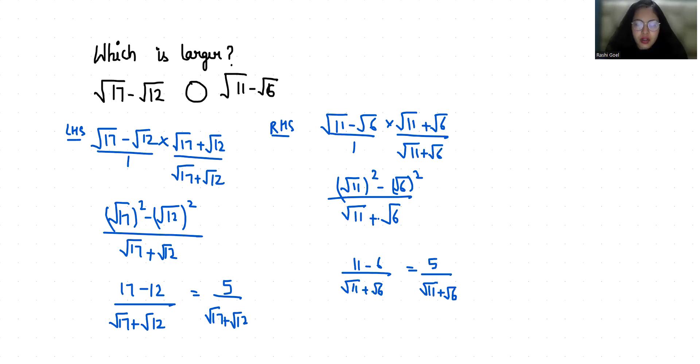Now we can see that our numerators are equal and we have to compare on the basis of our denominator. The first coefficient is root 17 here and root 11 here, so we can directly say that root 17 is greater. Second coefficient is square root 12 and here is square root 6, it is also greater. And there is an addition sign, so when we add these terms, obviously this one is greater.